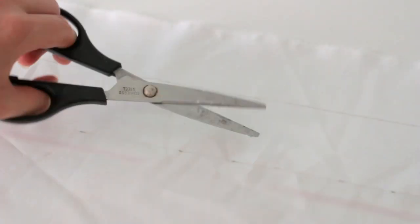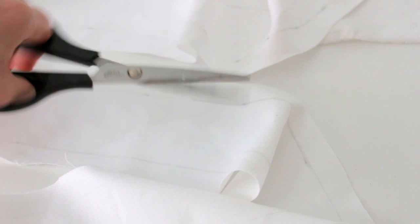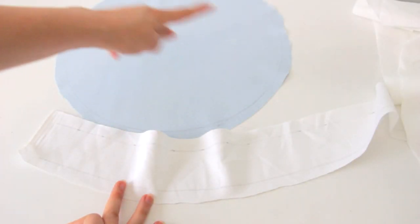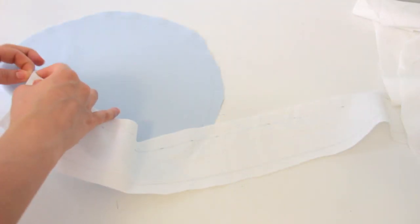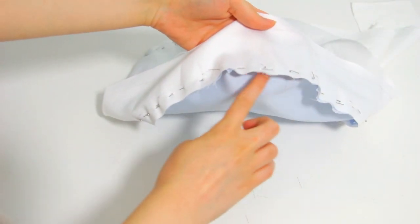Cut that strip too, again leaving one centimeter of seam allowance. Now it's time to pin the blue circles with the white strip. For that, place them right sides together and pin them following the pencil lines.